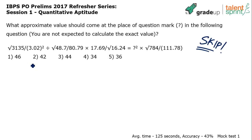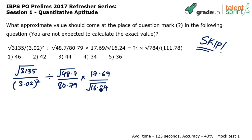So let's take it up. Now, let me just rewrite the question here so that it looks a little easier to follow. Square root of 3135 divided by 3.02 whole squared, divided by square root of 48.7 divided by 80.79, multiplied by 17.69 divided by square root of 16.24, which is equal to question mark squared into square root of 784 divided by 111.78.